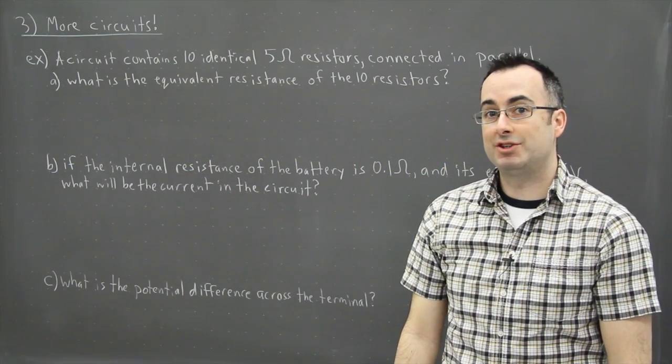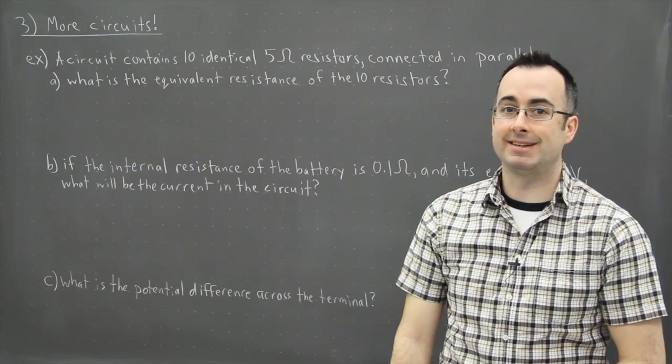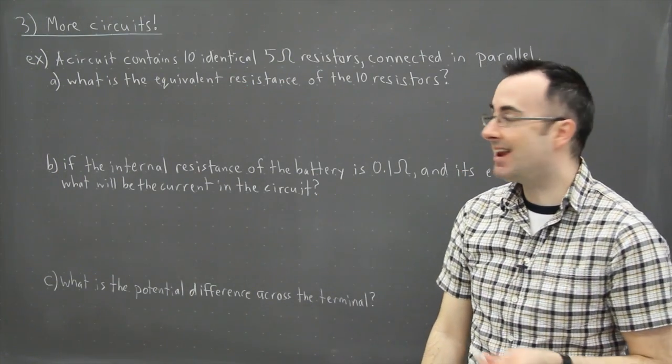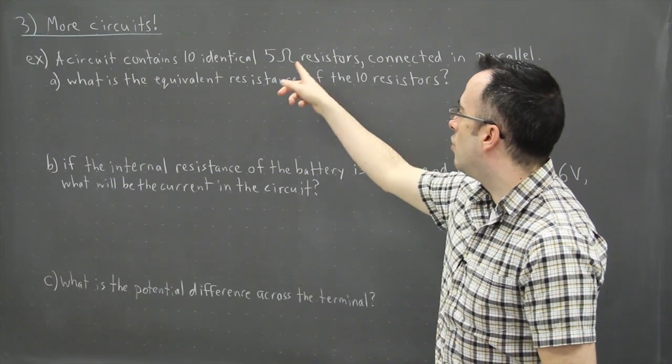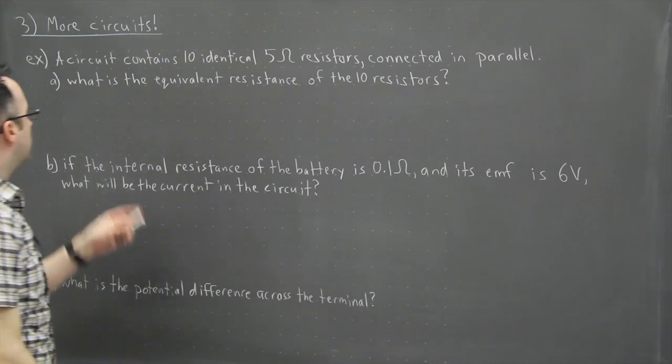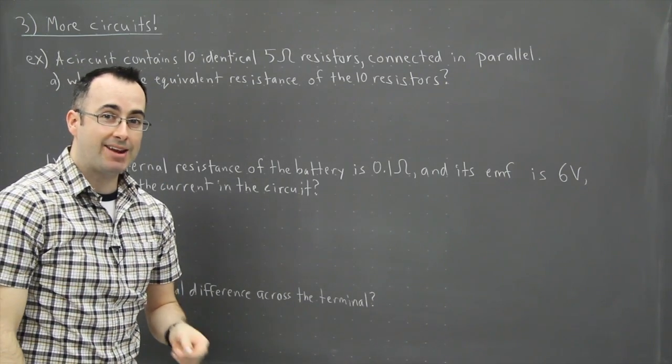I thought it might be a good idea to show you an example of how to use circuits and internal resistance. So here we have a circuit and it contains 10 identical 5 ohm resistors. Now these ones are connected in parallel and the question is what is the equivalent resistance of those 10 resistors.